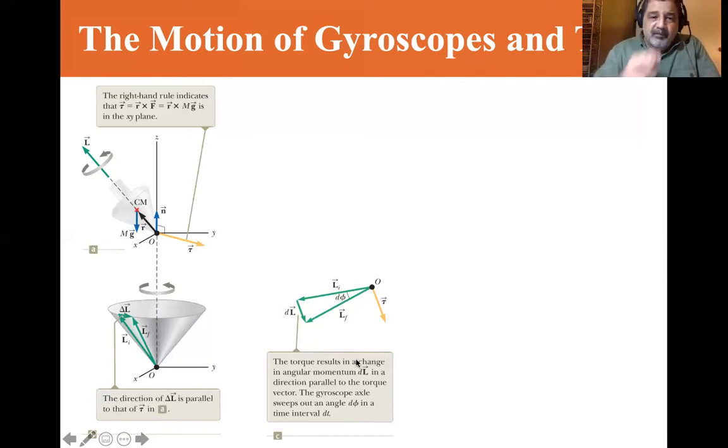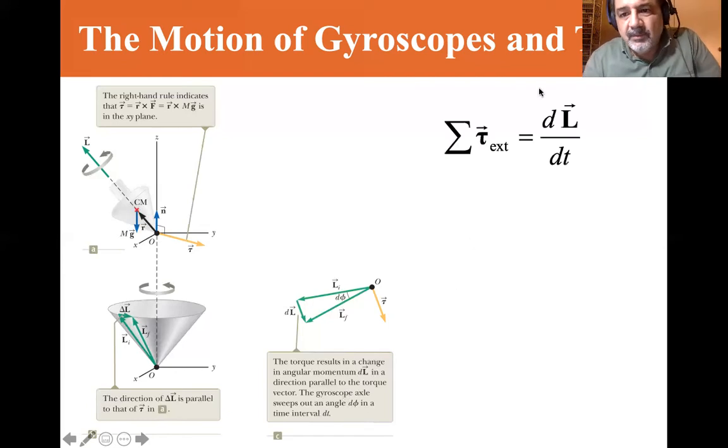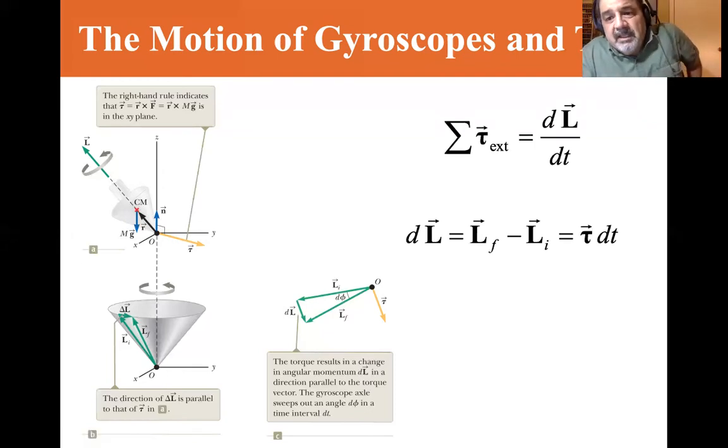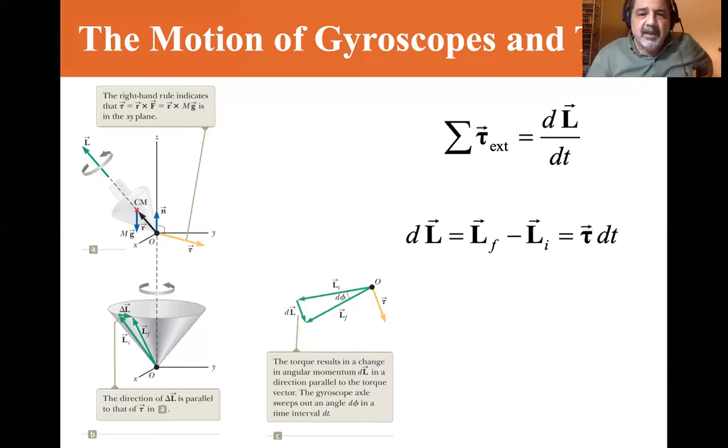Now from a top view, the torque results in a change in angular momentum DL in a direction parallel to the torque vector. The gyroscope axle sweeps out an angle D theta in a time interval of DT. So the external torque is equal to DL DT. The DL is equal to L final minus L initial is equal to the torque vector DT.